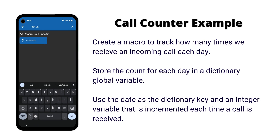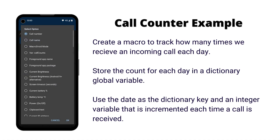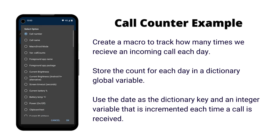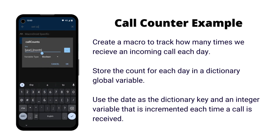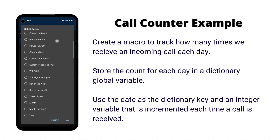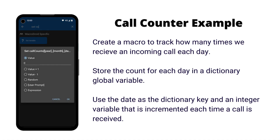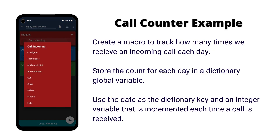Then we add a set variable action and select our dictionary global variable. We select to add a new key to the dictionary. Using magic text constructs, we can create a unique key based on the current date. This will be an integer to store the call count value. We select the option to increment the value, so each call will add one to the count for that day's entry.